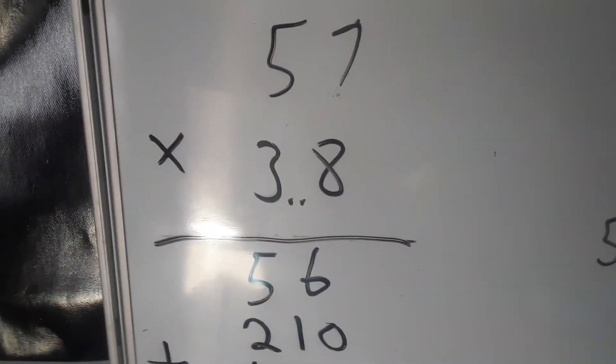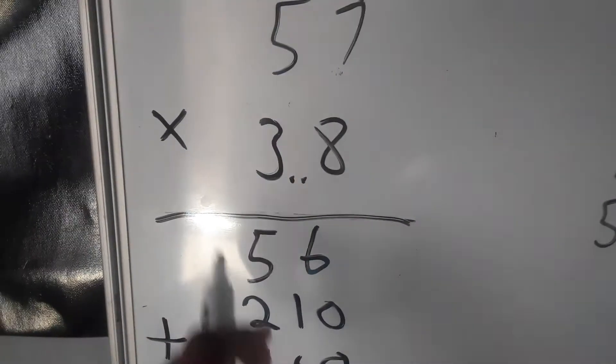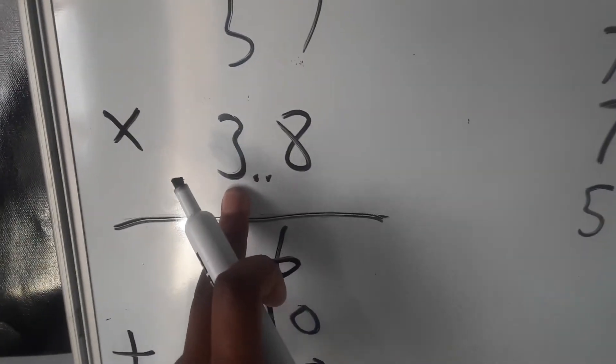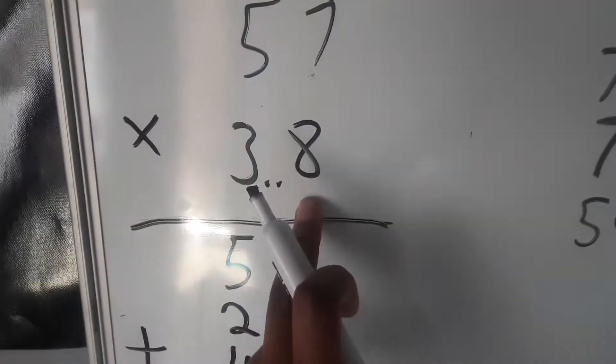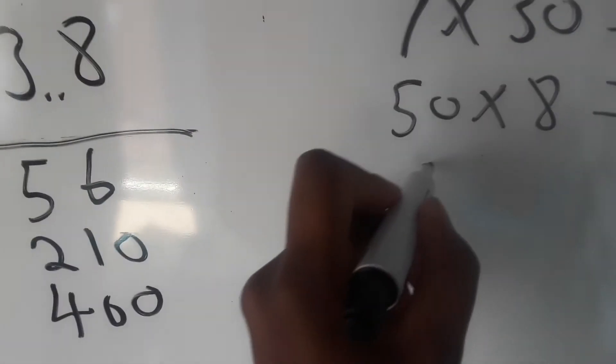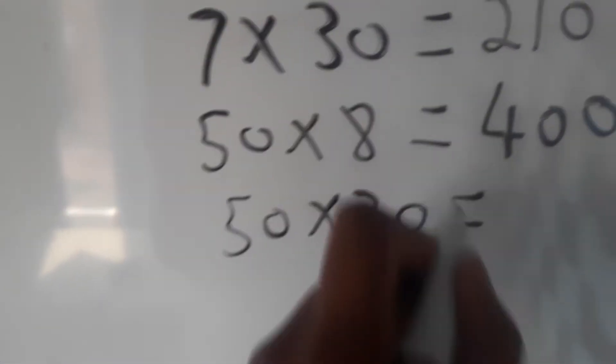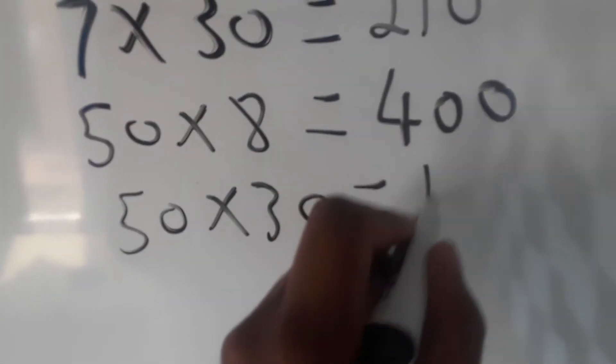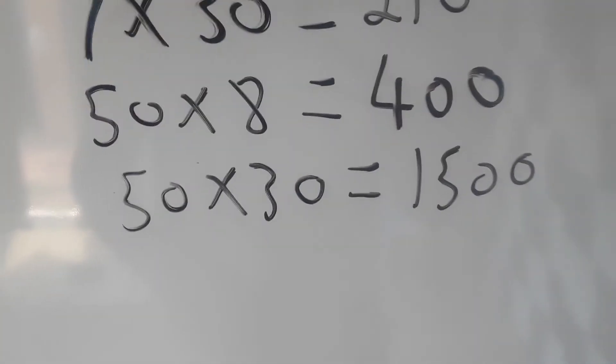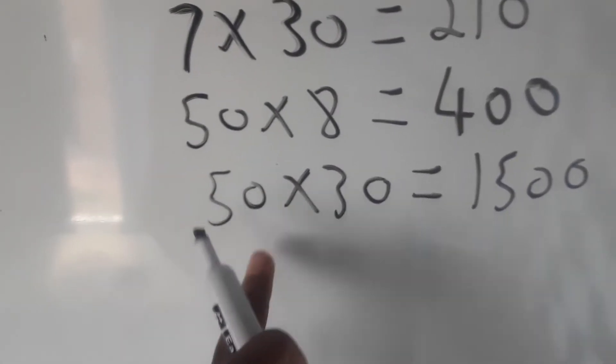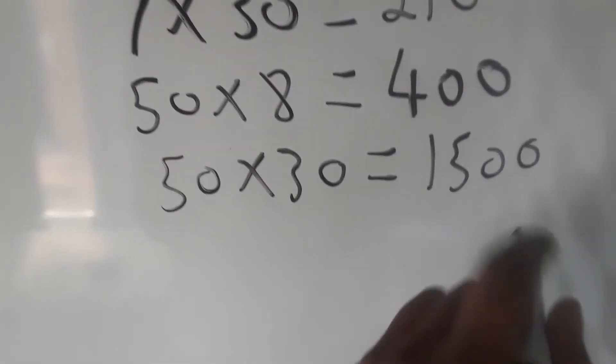We're gonna say 50 times 30 because we multiply the 50 times 30, which is gonna give us 1500. We'll say 5 times 3 is 15, then this is added and then we add the two zeros, 1500.